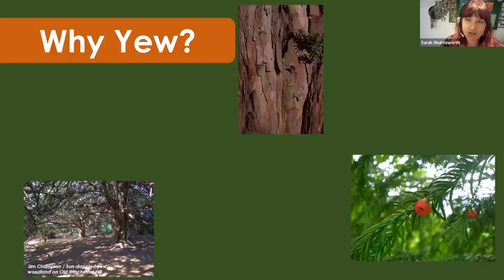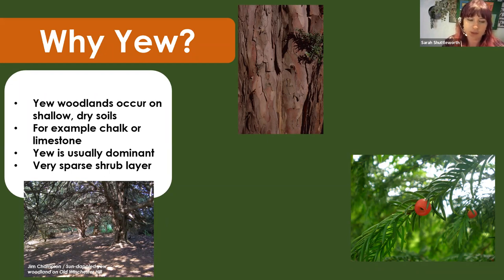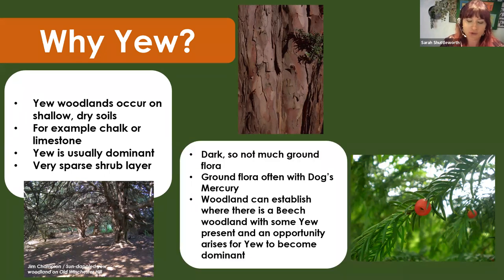One that does fit into dry deciduous but isn't actually deciduous — which is a little confusing — is our native yew woodlands. Not a common one you're likely to come across, with quite scattered distribution, but they would still be included in the dry deciduous fine habitat. Yew woodlands tend to occur on shallow, dry soils, particularly on chalk or limestone — for example, Kingley Vale on the chalk hills of the South Downs. Yew is usually the dominant tree species.